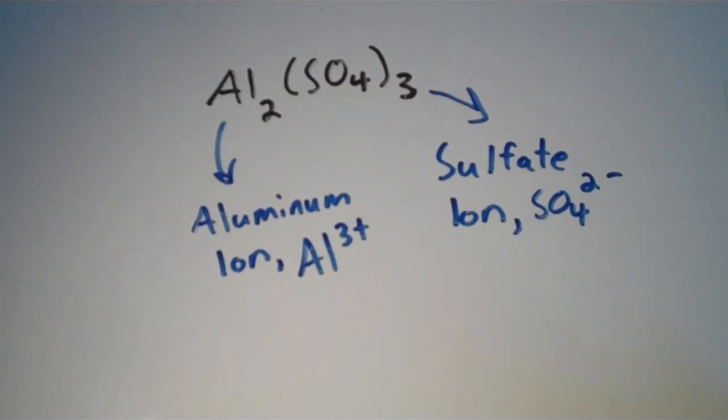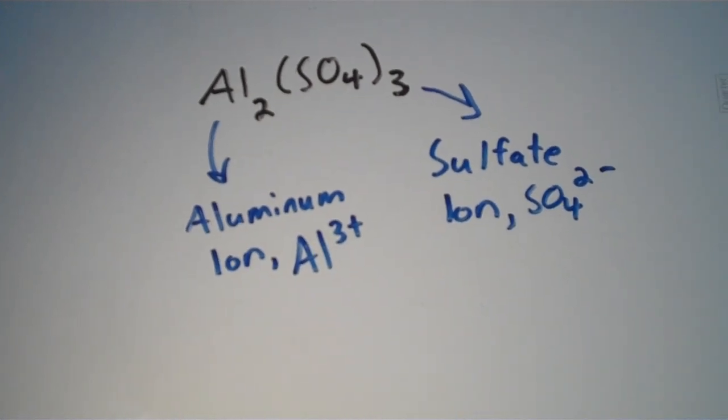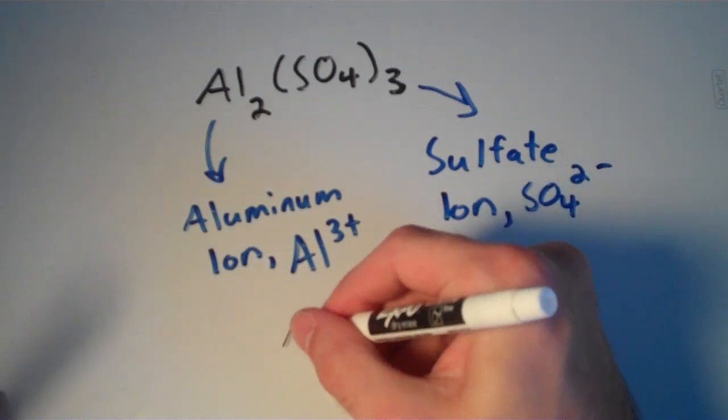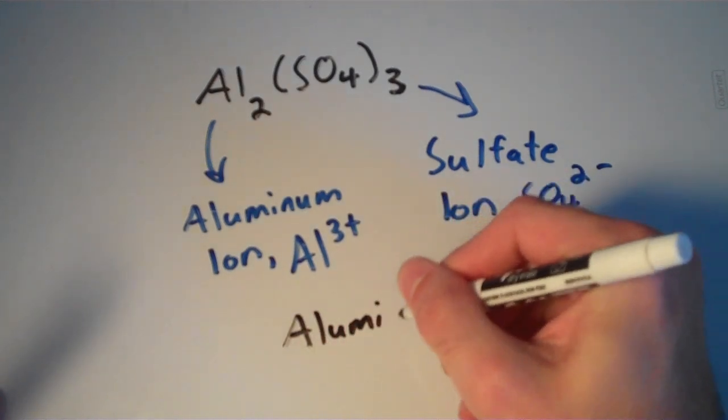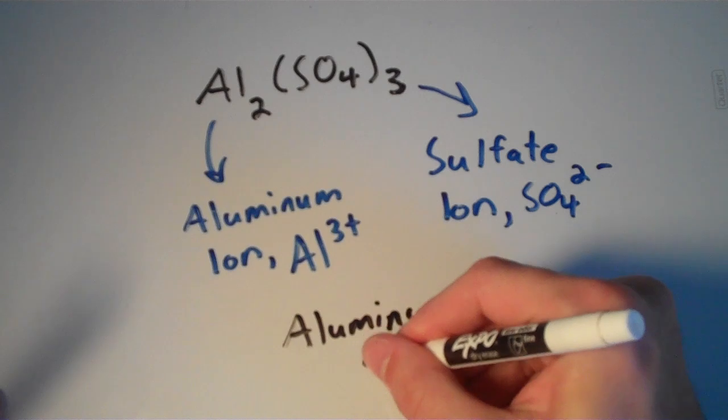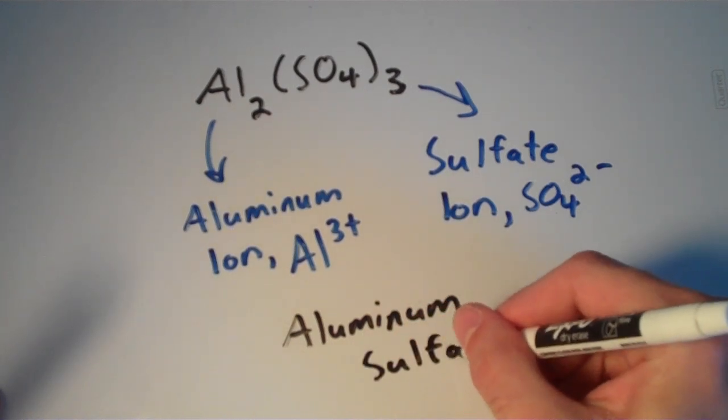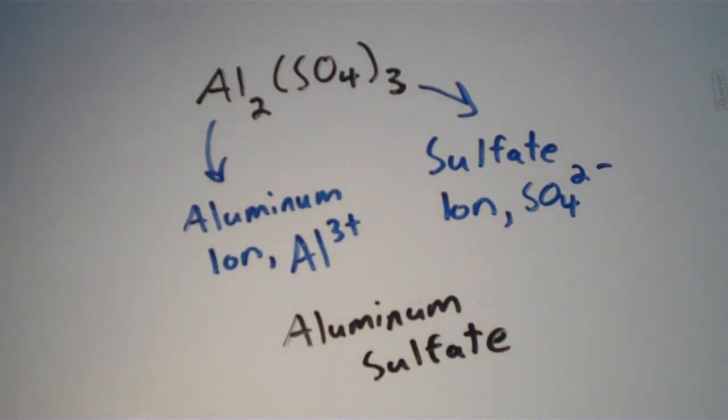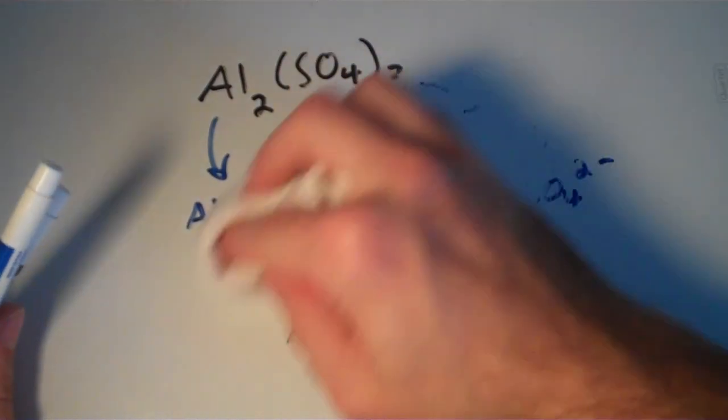So aluminum ion is our cation. Sulfate ion is our anion. So the compound is aluminum sulfate. Now let's move on to one that might be a little bit tricky.